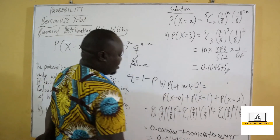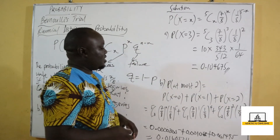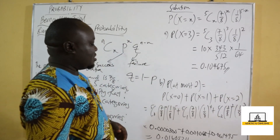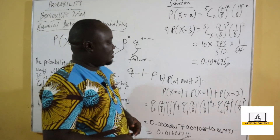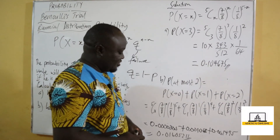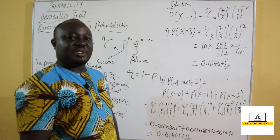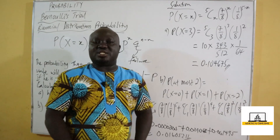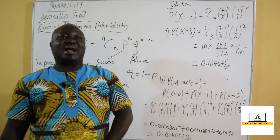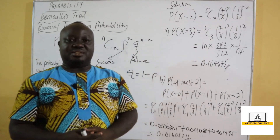So the probability that he won at most two awards is 0.01605211. With this, let's solve another question on binomial probability.